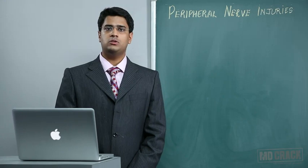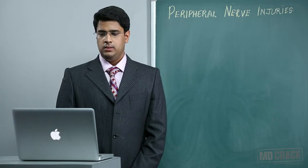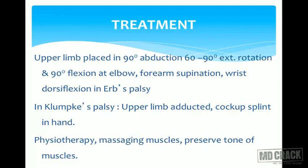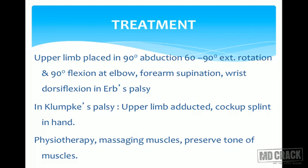Coming to the treatment: in Erb's palsy, the upper limb is placed in 90 degrees of abduction with 60 to 90 degrees of external rotation and 90 degrees of flexion at the elbow; the forearm goes into supination and the wrist is in dorsiflexion.